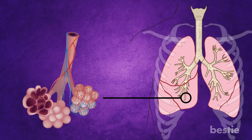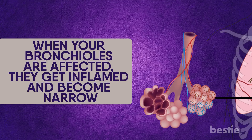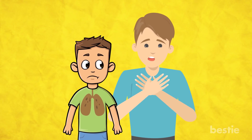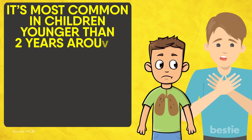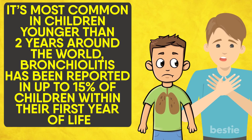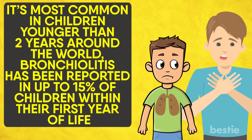The bronchioles' job is to control your air flow. When they are affected, they get inflamed and become narrow, allowing less oxygen to come in. Bronchiolitis can hurt both young children and adults, but it's most common in children younger than 2 years. Around the world, bronchiolitis has been reported in up to 15% of children within the first year of life, particularly among those born prematurely. However, patients with chronic lung disease and heart issues also need to take special care, as these are listed as heavy risk factors.